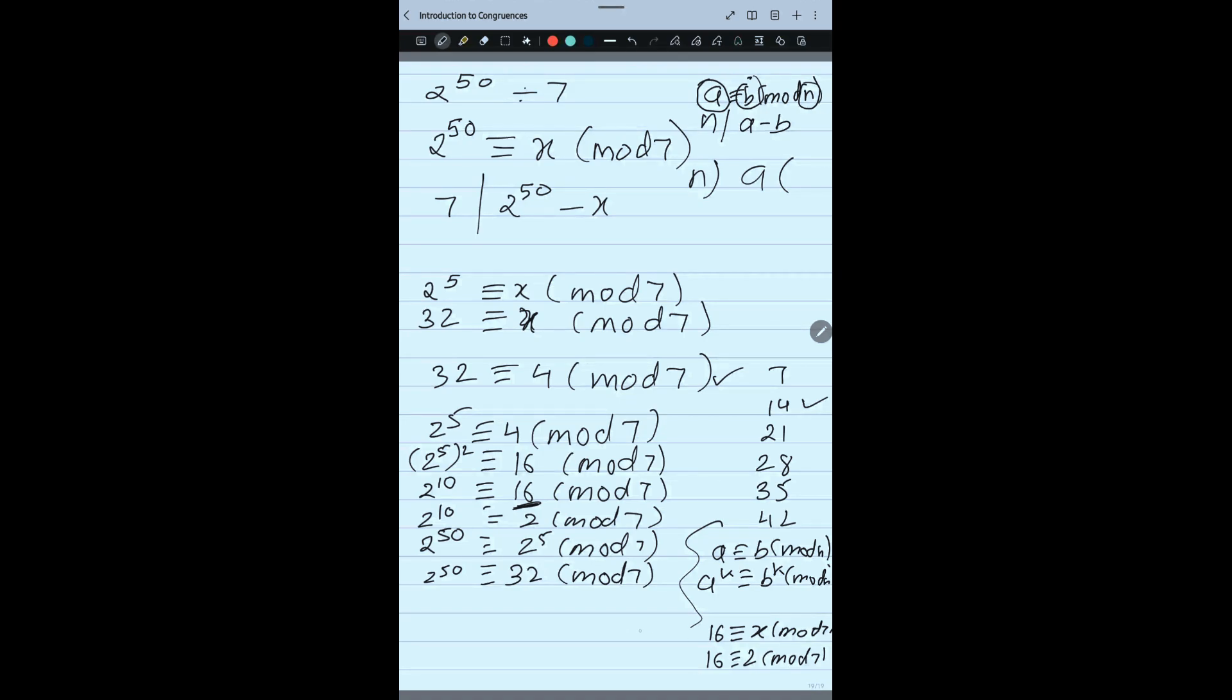So 32 congruent X mod 7, right? So what I should put in place of X? I want to go to 28. 32, 28 is in table of 7. So I will write 4. So 2 to the power 50 congruent 4 mod 7.